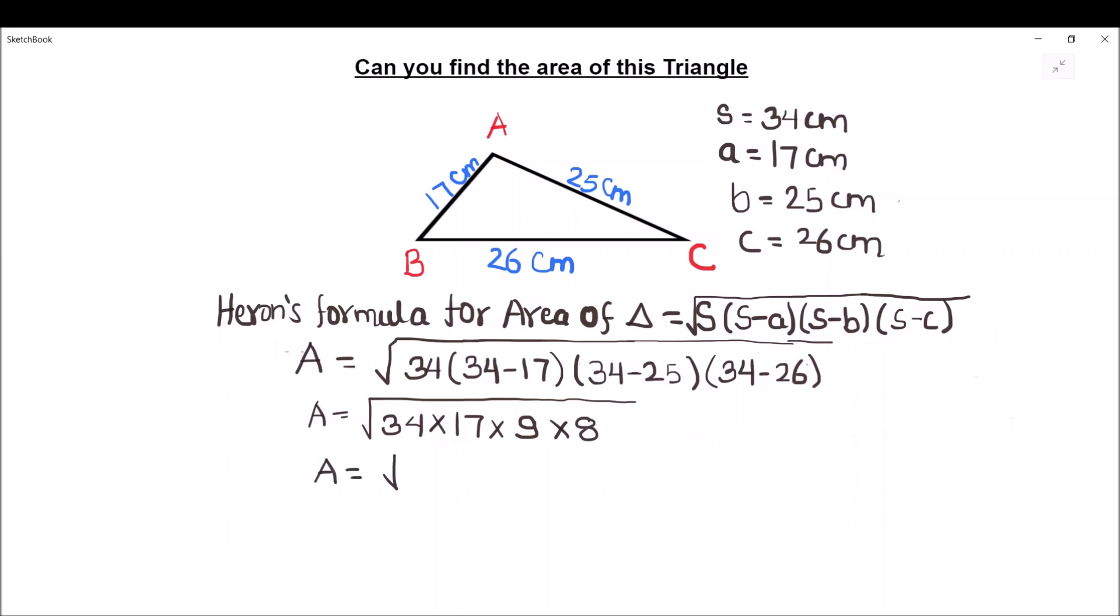So area is equal to, instead of multiplying the numbers, let's write the numbers as squares so that we can find the square root easily. So 34 will be equal to 17 times 2, 17 times 9 will be equal to 3 times 3, and 8 we can write as 4 times 2.